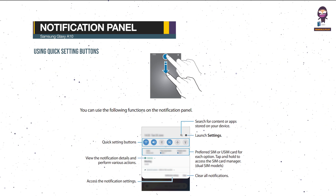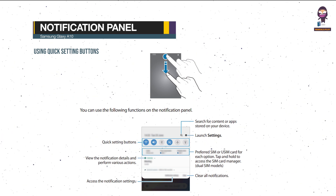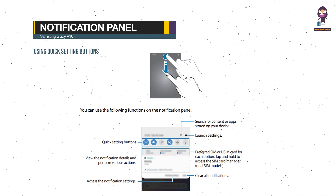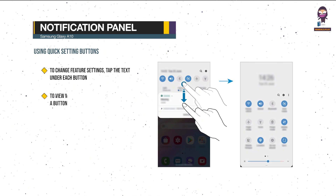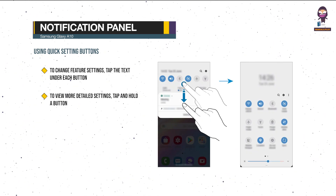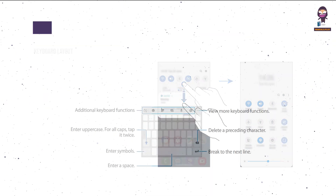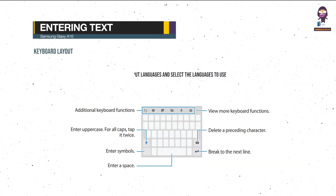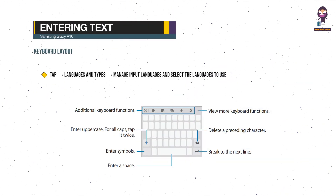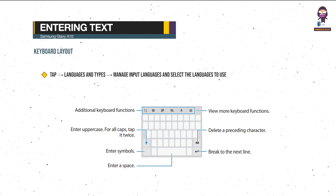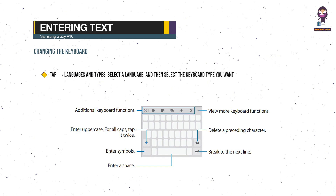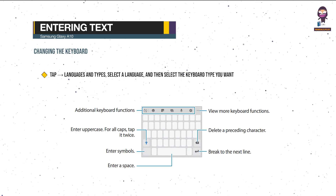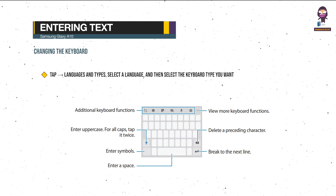Notification panel — using quick setting buttons: to change feature settings, tap the text under each button. To view more detailed settings, tap and hold a button. Entering text — keyboard layout: tap Languages and Types, Manage Input Languages, and select the languages to use. To change the keyboard type, tap Languages and Types, select a language, and then select the keyboard type you want.